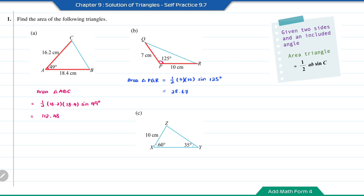Question C: in triangle XYZ, we have two angles and one side. We need to find the length of another side so that we have two sides and one included angle. First, we find the angle at Z using 180 minus 60 minus 35, which gives angle Z equal to 85 degrees.